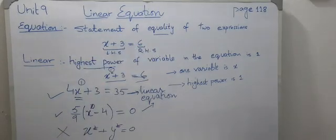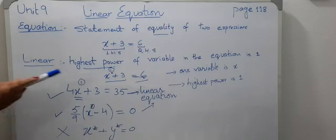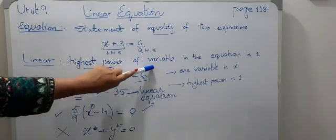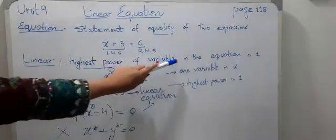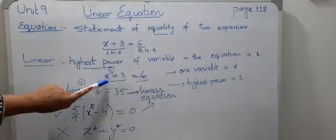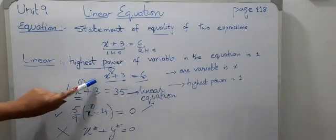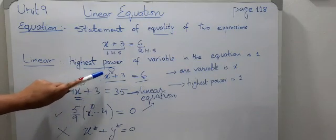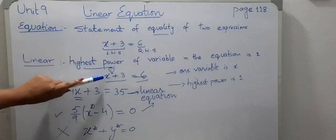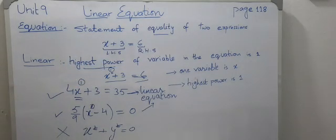Now the next point: linear means highest power. Highest power of the variable — the variable here is x. So the highest power of the variable in the equation should be 1. In x plus 3 equals 6, the variable is x and the highest power is 1, so this is a linear equation.